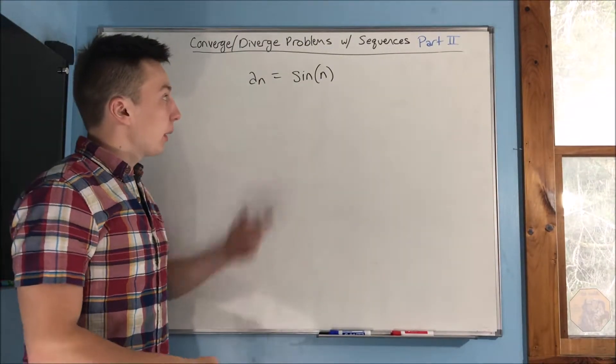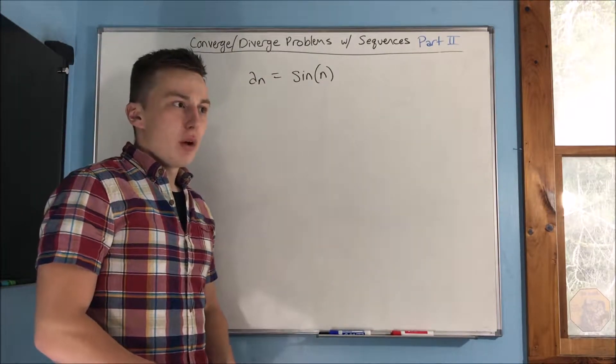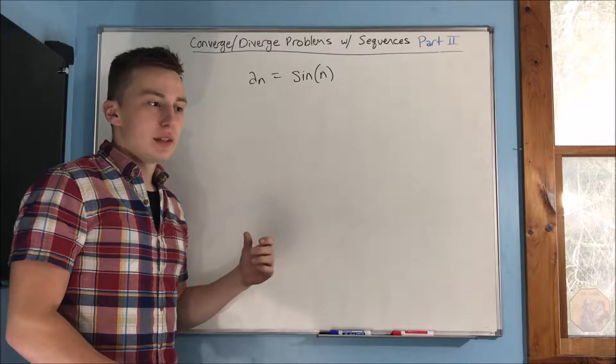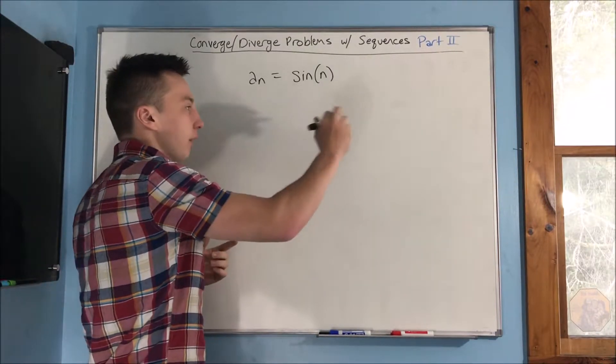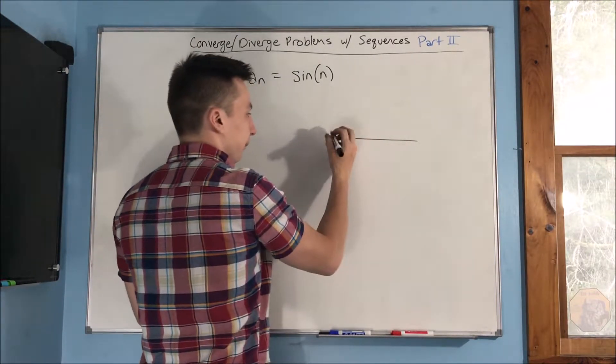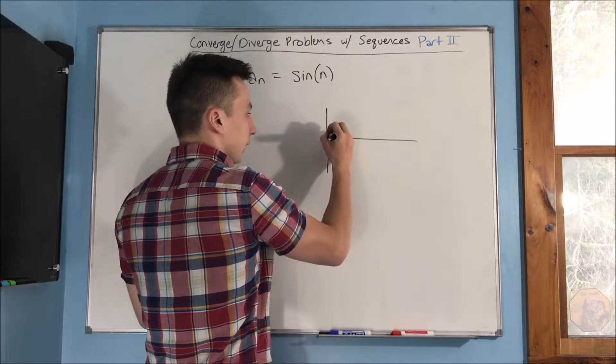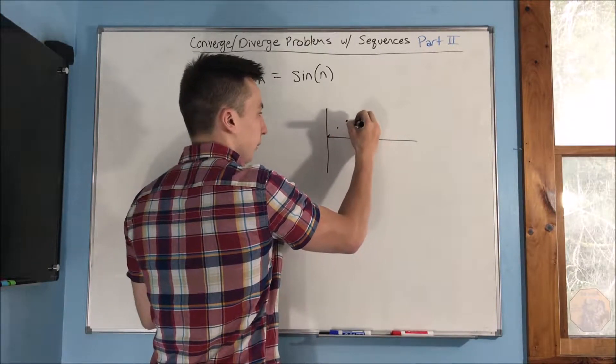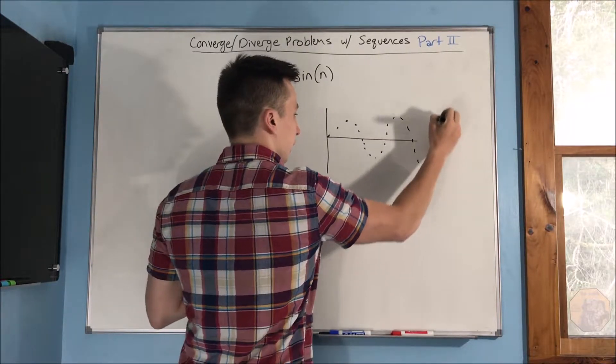Now, a little bit of a more interesting one here. A sub n equals sine of n, okay? What's going to happen here because sine of n, well, that's going to look like this, right? This is going to be here and here. And we're just going to get something that looks like this. It's going to go up and go down and up and down and up.